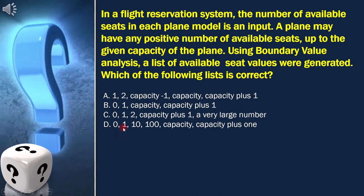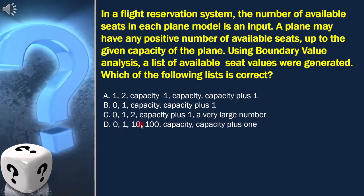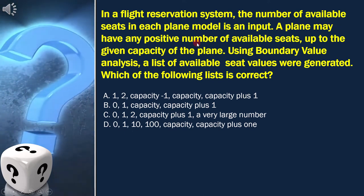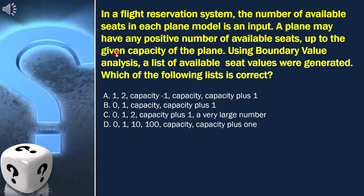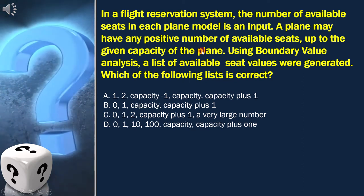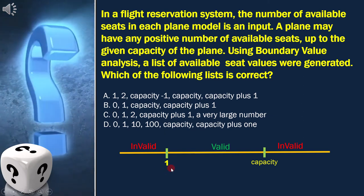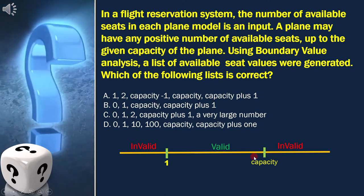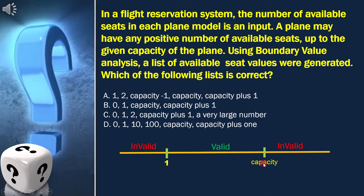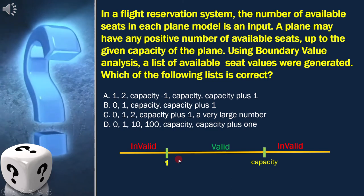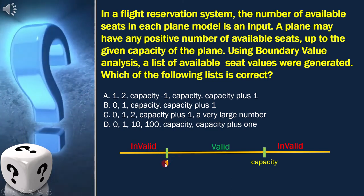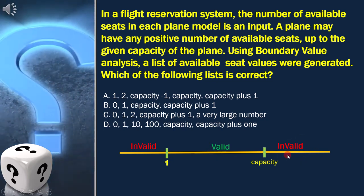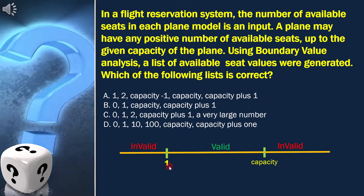And these are the options. Now let's draw the boundary value analysis diagram. As per the question, a plane may have any positive number of available seats, up to the given capacity of the plane. As we know, the first positive number is one available seat which a plane can have. And the upper boundary is max capacity of the seat in the plane. In the diagram, any number below 1 is invalid. Numbers from 1 to the max capacity are valid and numbers above the capacity are invalid. With this, the boundary value analysis diagram is ready.